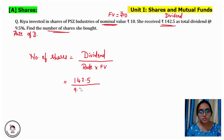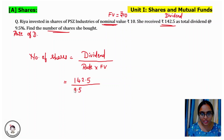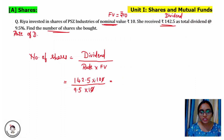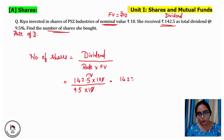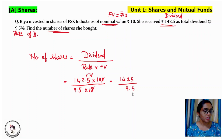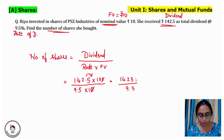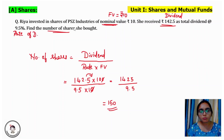Rate is given as 9.5%. Since this is a percentage, we multiply by 100 in the numerator. Face value is given as Rs.10. Let's cancel the 10. So 1425 divided by 9.5 gives 150. The number of shares she bought is 150.